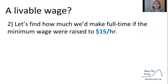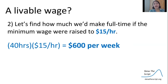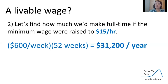Now, what if we were working that full-time job, but now we're working with a $15 minimum wage? We're going to take our 40 hours per week, multiply it by $15 per hour, and we're going to see that we'd be making $600 per week. If we want to see what that would be per year, we take that $600 per week, multiply it by 52 weeks in the year, and we'd see that we'd be making $31,200 per year — a little over $31,000.